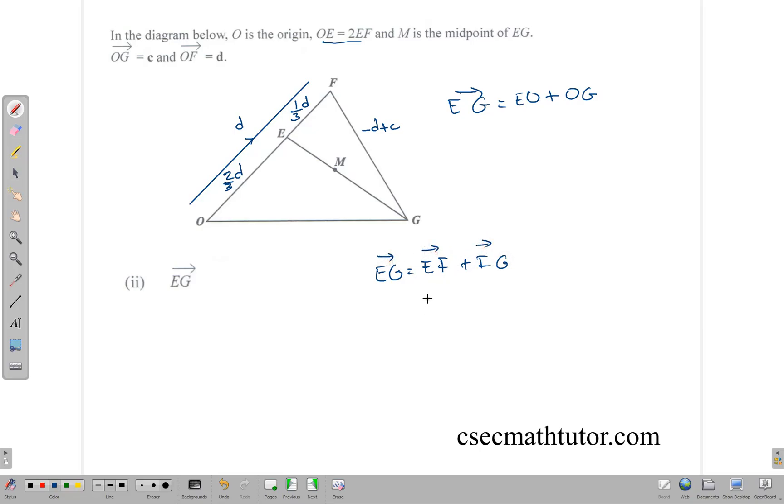Now in terms of the information given here, OE is twice as long as EF. So this part of the line is twice as long as that part, meaning that the line is cut into 3. This line, which has the component D in that direction, is cut into 3. Which means that this part is 1 third of the line, so it's 1 third D, and right here is 2 third D.